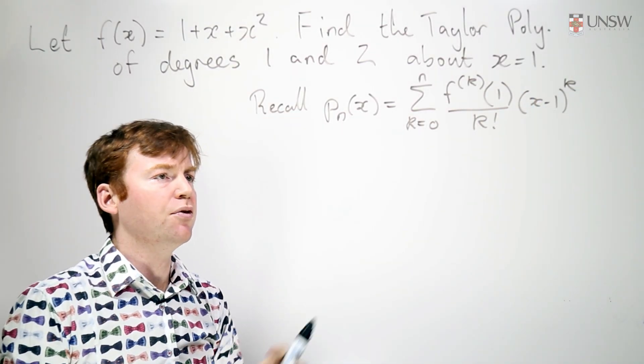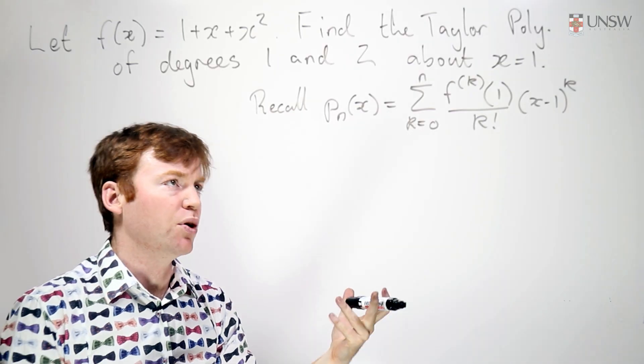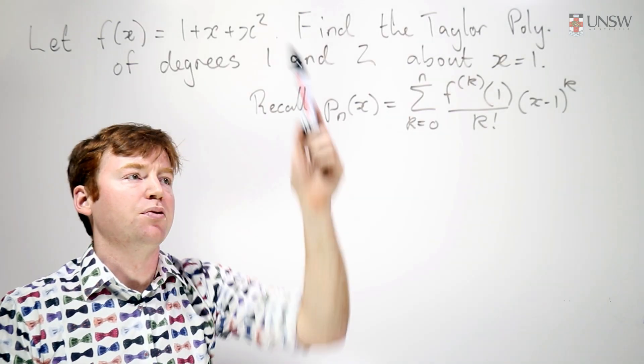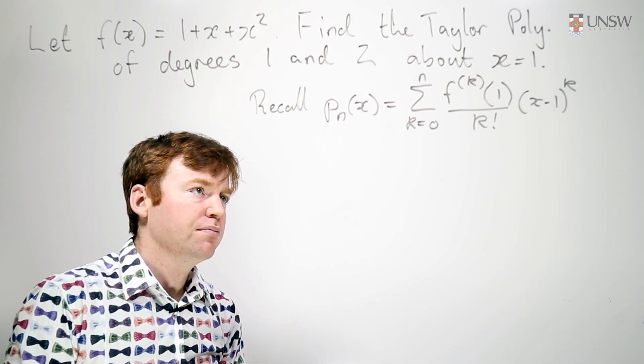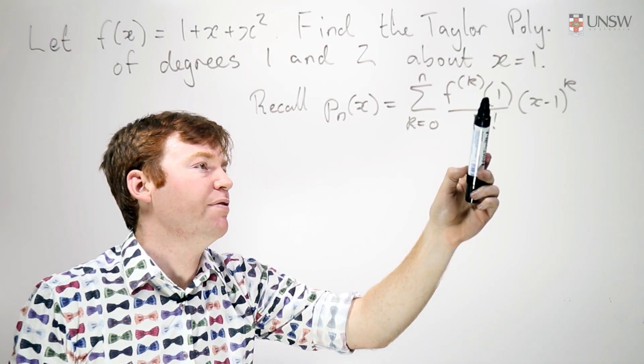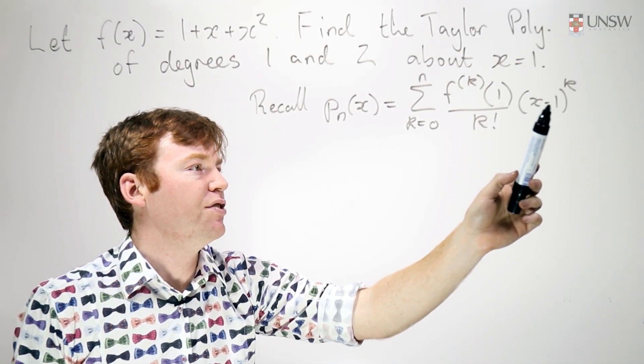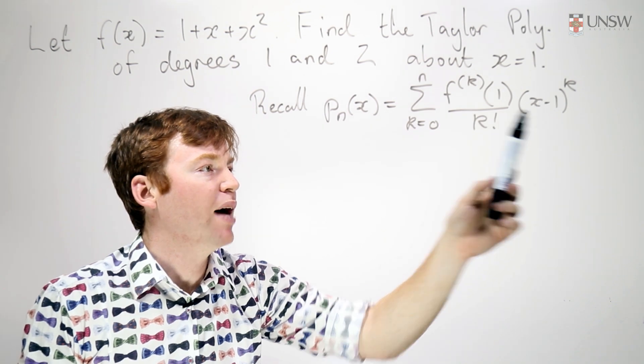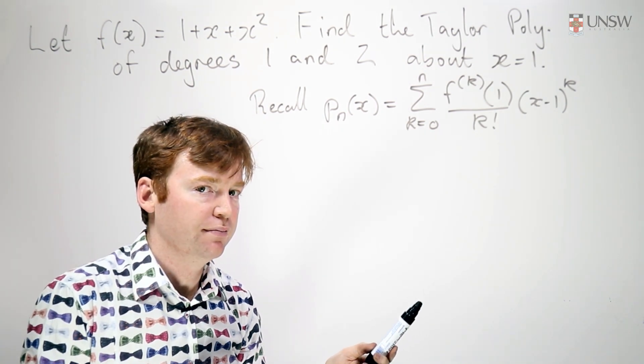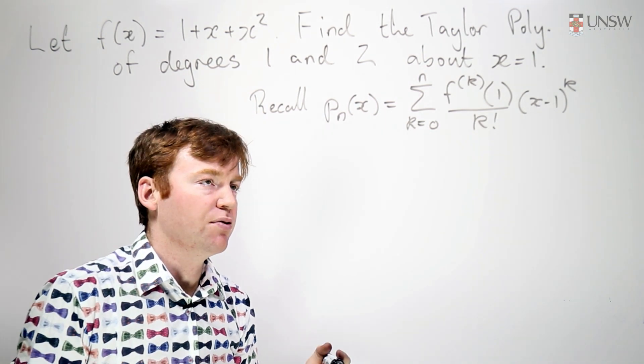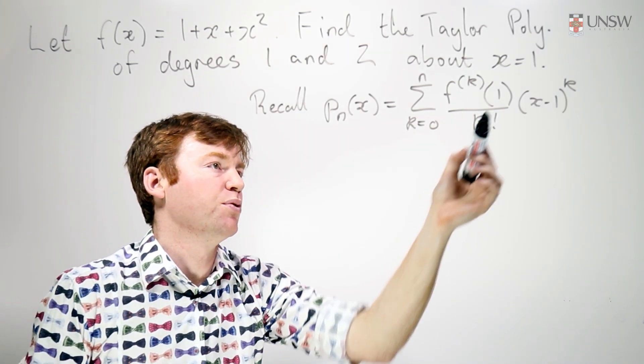So this is the formula for the degree n Taylor polynomial approximation to a function f. These here are the derivatives evaluated at 1, and it's a polynomial expressed in terms of powers of x minus 1. And it's fairly straightforward to just apply this formula—we need to compute some derivatives.